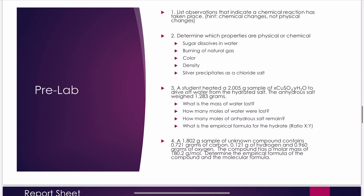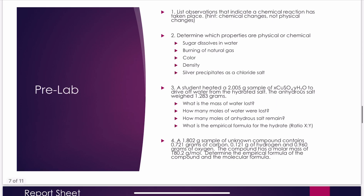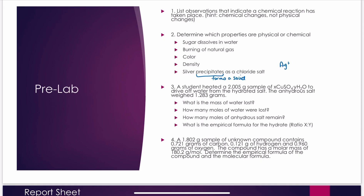On the pre-lab: list observations that indicate a chemical reaction has taken place — think about chemical changes, not physical changes. Number two: determine which properties are physical or chemical for things like sugar dissolving in water, burning natural gas, and color. Color is a trick here — identifying the color of a substance is a physical property, but a color change is a chemical property. Density is also there, and silver precipitating as a chloride salt means silver ions in solution formed solid silver chloride when chloride ions were added.